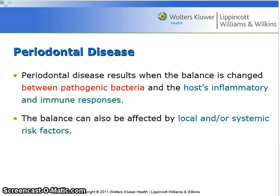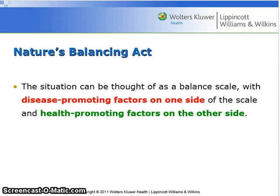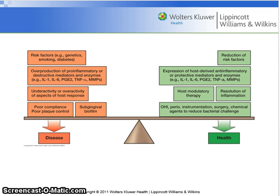Periodontal disease results when the balance is changed between pathogenic bacteria and the host's inflammatory and immune responses. The balance can also be affected by local and/or systemic risk factors. The situation can be thought of as a balanced scale, with disease-promoting factors on one side and health-promoting factors on the other. See Figure 12.2 on page 212 for more information.